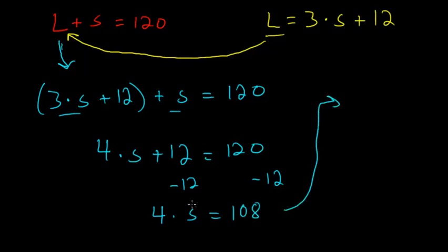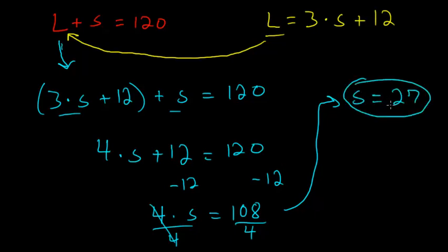From here, I just have to divide each side by 4 so that these cancel out. I'm left with S is 108 divided by 4, or S is 27. This is our smaller part.